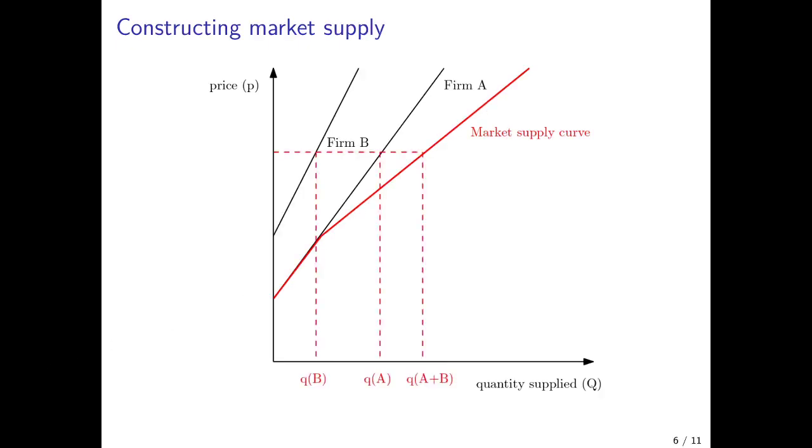So again, we can go more into the details of this aggregation. And here we have the quantity supplied by firm B for a hypothetical price level here of this level P. And this firm would then supply a quantity Q of B here. Firm A would supply a quantity Q of A here. And if we add them together horizontally, we would get total supply of these two firms, which we assume are the whole market.